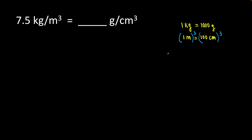One cubic meter is equal to 100 to the third power — 100 times 100 times 100 — which equals one million. Centimeters cubed will be centimeters times centimeters times centimeters. So we get that one cubic meter is equal to one million cubic centimeters.